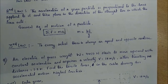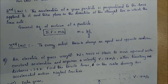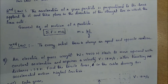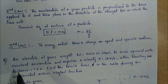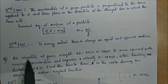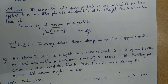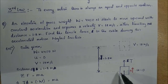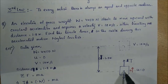Example one: an elevator of gross weight W equals 4450 N starts to move upward with constant acceleration and acquires a velocity V equals 18 m/s after traveling a distance of 1.8 m. Find the tensile force in the cable during this accelerated motion. Neglect friction. The elevator is like a lift — let us draw a diagram.